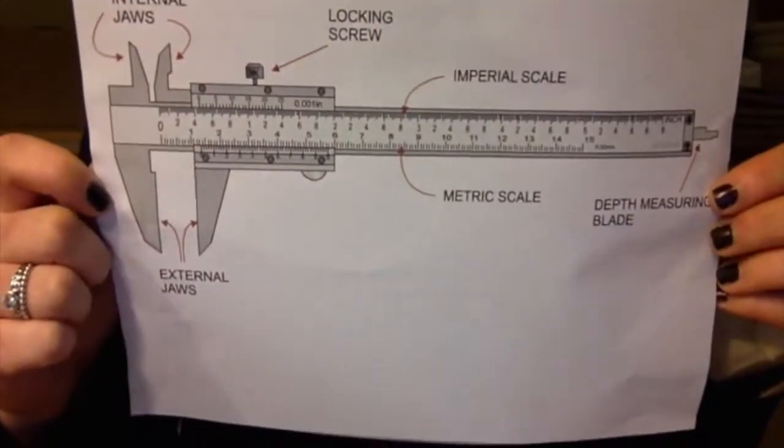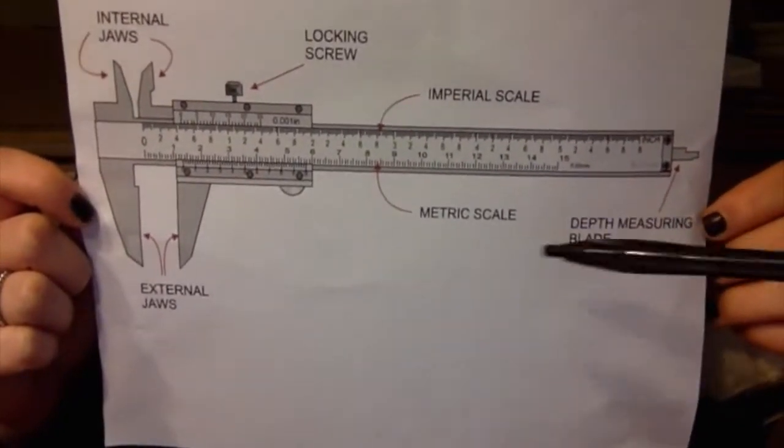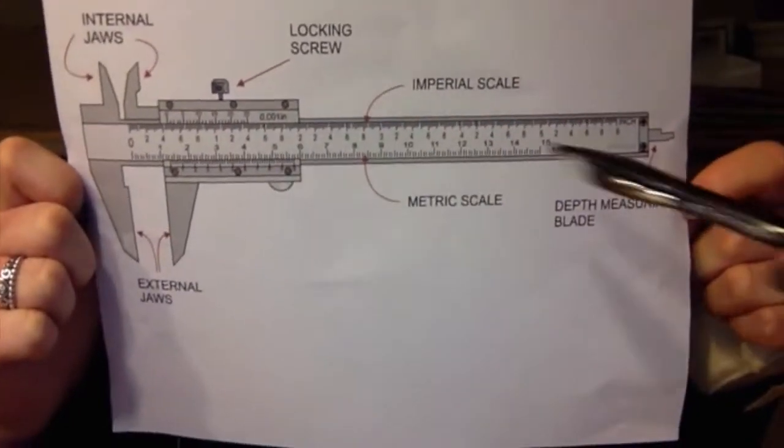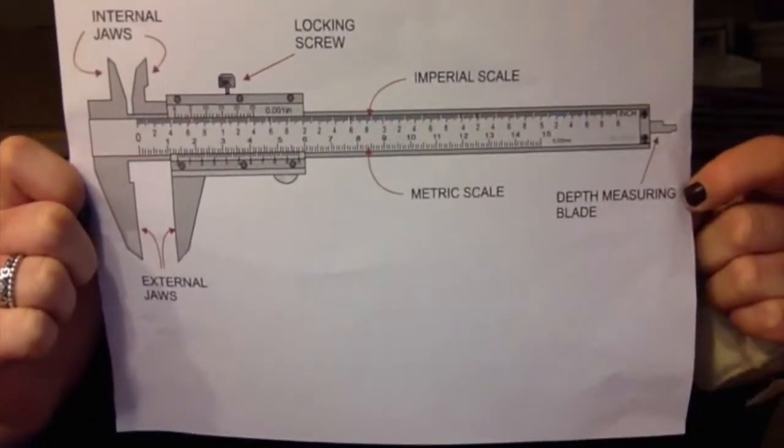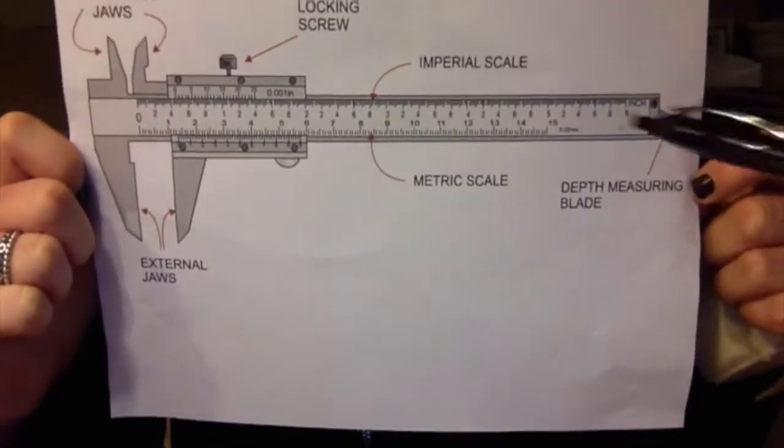When you're measuring an object, you want to make sure you're using the bottom scale, which is the metric units. The boldface numbers on the fixed scale are centimeters, and the tick marks on the fixed scale between the boldface numbers are millimeters.